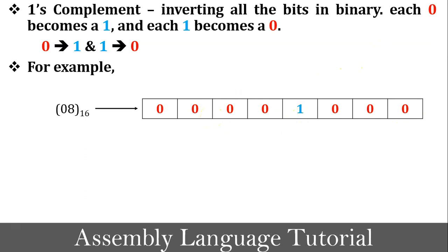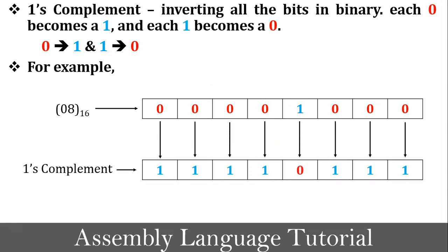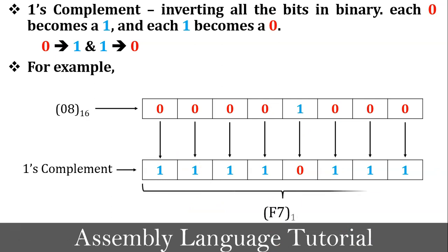As per the definition of one's complement, inverting all the bits means all 0s become 1 and all 1s become 0. This is the one's complement of 08 in binary format. Converting this binary value back to hexadecimal, the result is F7. So F7 is the one's complement of 08, shown here in hexadecimal format.